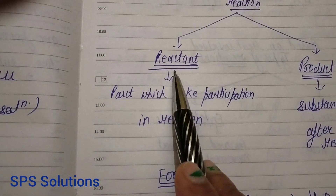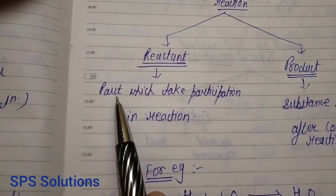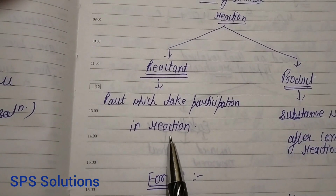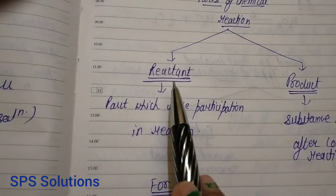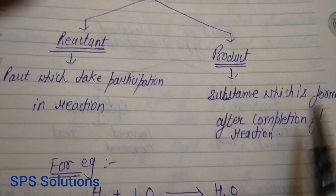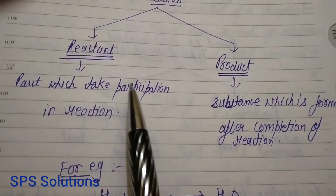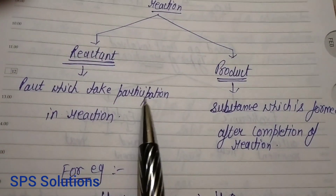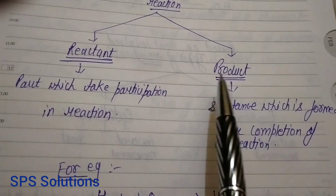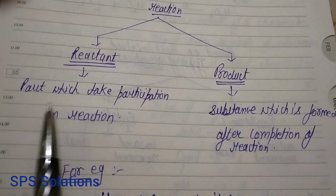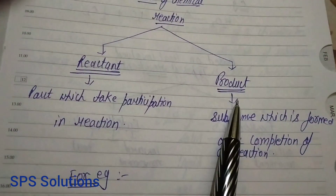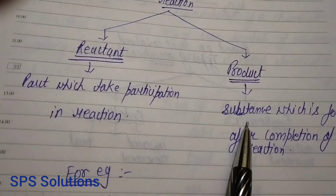First is the reactant: the substances which participate in the reaction — which are reacting — are called reactants. The product is the substance which is formed after the completion of the reaction. After the reactants finish reacting, the new substance formed is the product. So reactants are those which are participating and reacting, and products are the substances formed after the completion of the reaction.